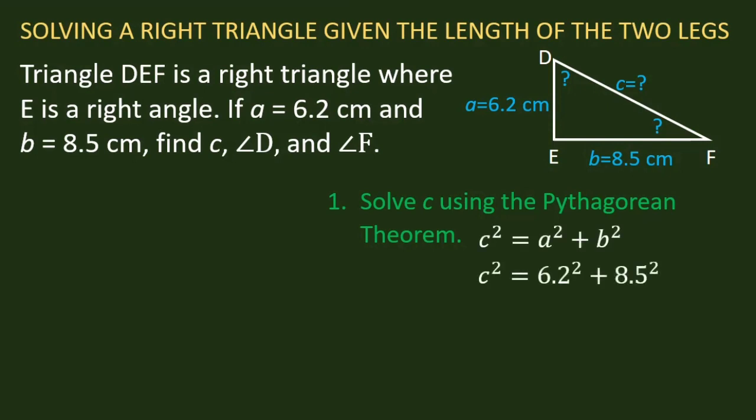We square a and b. c² = 6.2² + 8.5². We add 38.44 and 72.25 to get 110.69. But we need to get c, so we take the square root of 110.69, and the value for c is 10.52 centimeters.